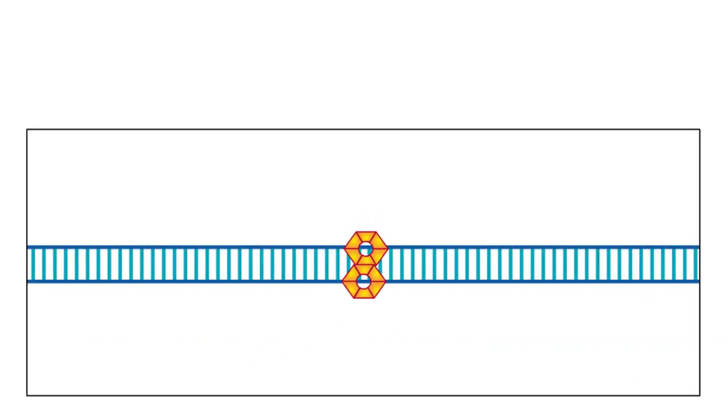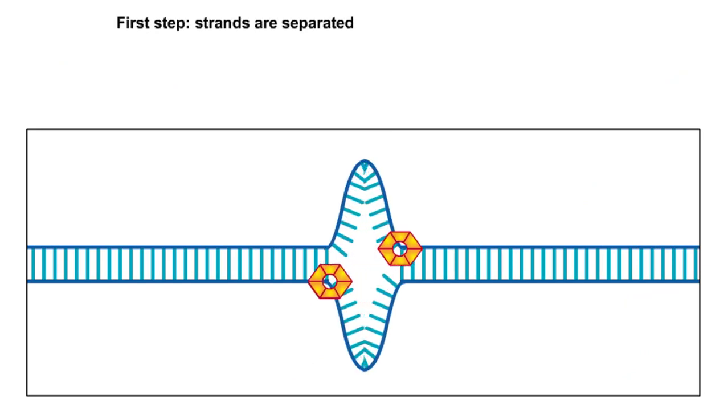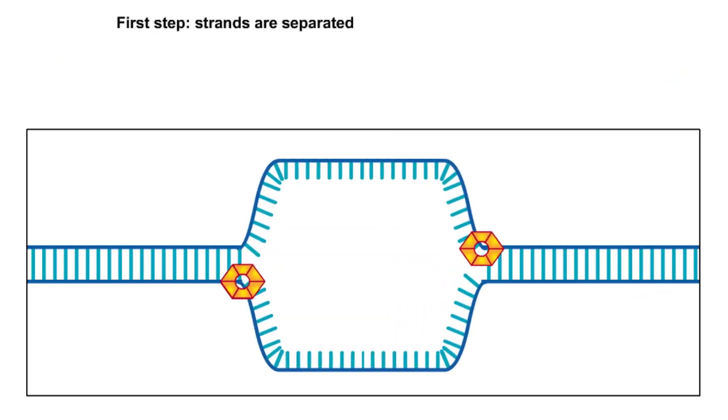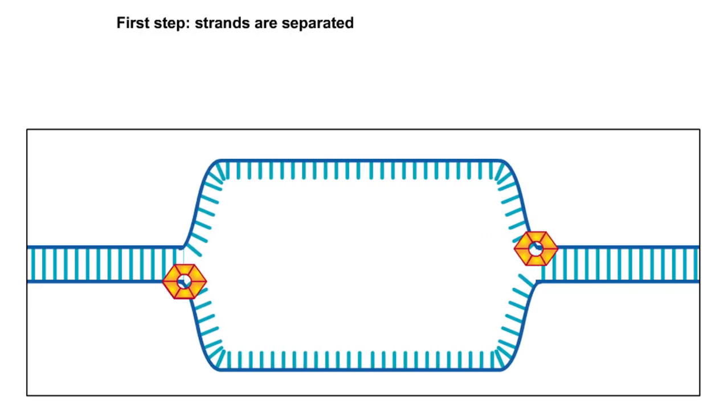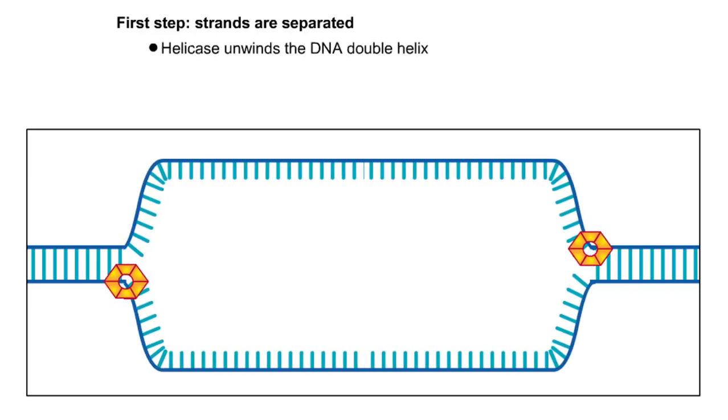Let's look at the steps of DNA replication in more detail. To begin the process of DNA replication, the two double helix strands are unwound and separated from each other by the helicase enzyme.